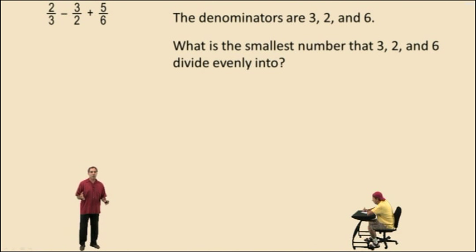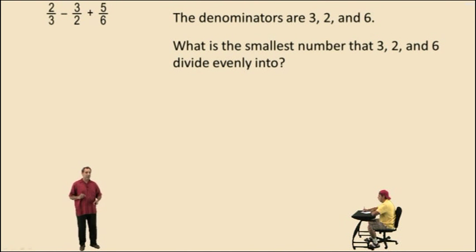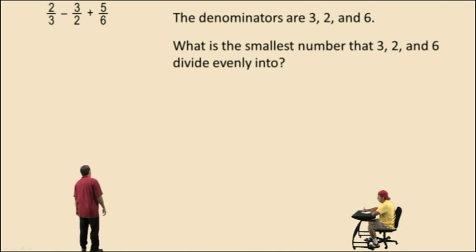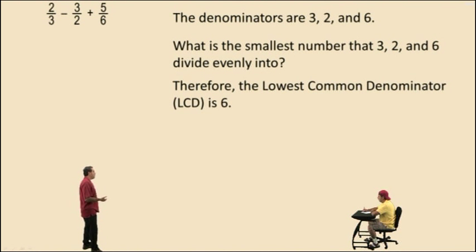Now, if 6 did not work — remember, 6 is our largest denominator — you would try a multiple of 6. Meaning, if 6 didn't work, try 6 plus 6, which is 12. If 12 didn't work, then try 6 plus 6 plus 6, which is 18. So in this pre-algebra course, that's a good way of finding the lowest common denominator. In this case, 6 was our lowest common denominator because all of our denominators divide evenly into it.